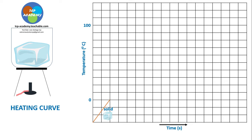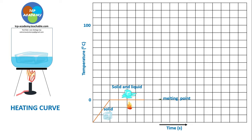We start out with the ice cube, applying some flame — heat energy being applied — starting to change state. We have both solid and liquid here, reaching the melting point.